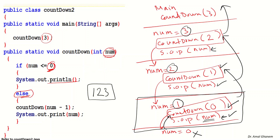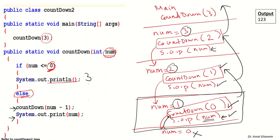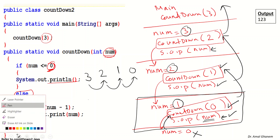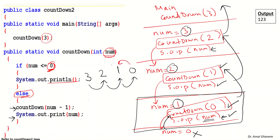The key idea is: do you call first, or do you output first? In this example, you go to the next number — two, one, zero — without outputting. When you reach zero, you come back, and the first output is one, then two, then three. You are going deeper without outputting, and only when you return do you print. That is why the first output is the last number found.